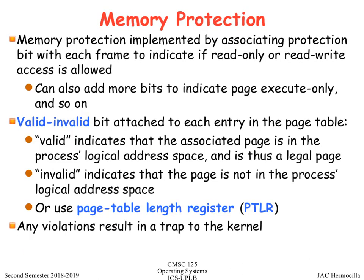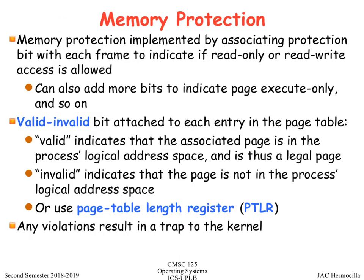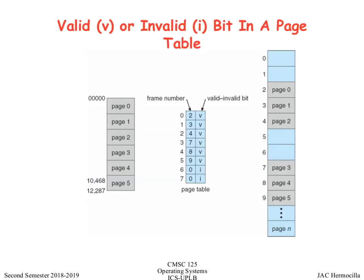Memory protection in paging uses valid or invalid bits in the page table or TLB. Page faults occur when you access an invalid page entry — for example, accessing a page outside the allocated page table entries for a process.